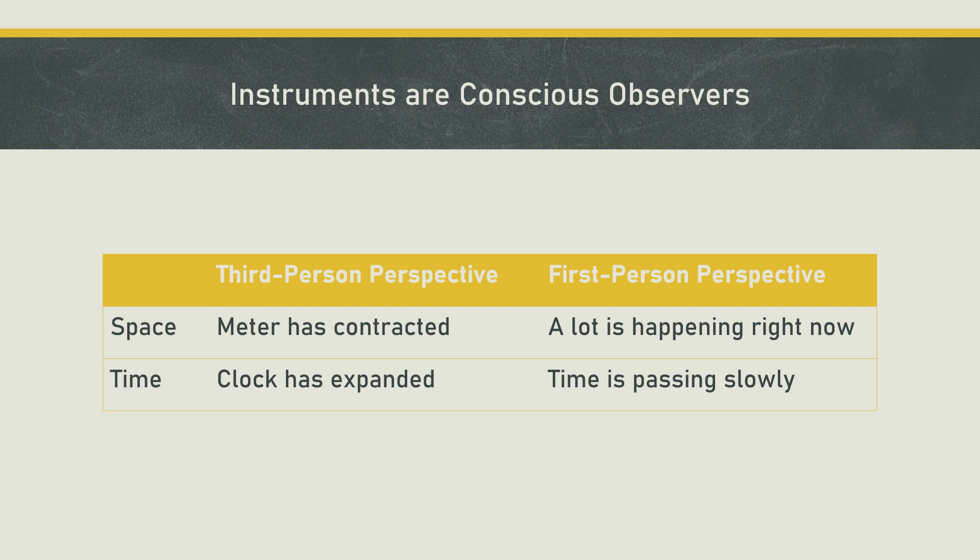Once we see the equivalence between how time in our life seems longer or shorter, and how more is achieved during difficult time and less during easy time, then we can understand that instruments are also conscious observers — they exhibit the properties of conscious observers with regard to easier and harder times. All the weirdness we feel about relativity is because we think instruments are unconscious things. We have to stop thinking about instruments and think about ourselves; when we understand how we feel about dilating and contracting times, we see that instruments are behaving just like us.